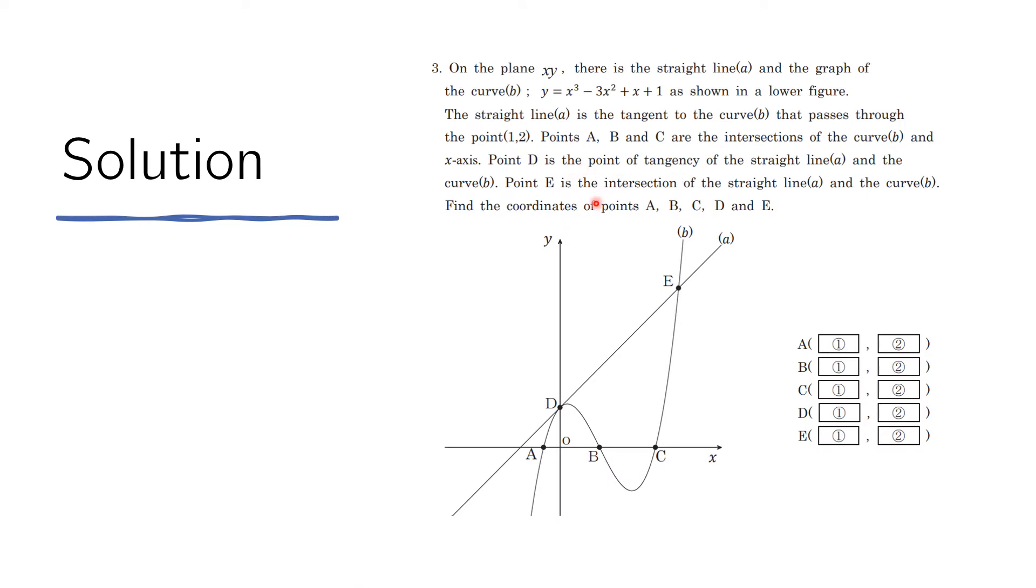Just from the drawing and from the problem, we immediately see some answers for some of the blanks. For example, here we have A, B, and C, which are the intersection with the X axis. And therefore, their Y component must be 0. So we can just write 0, 0, 0 here. That's the Y coordinates. It's on the X axis. And also for D, D is the point of tangency. And at the same time, it is also on the Y axis here. And therefore, its X component must be 0. And so we write that there.